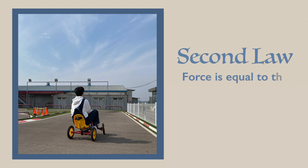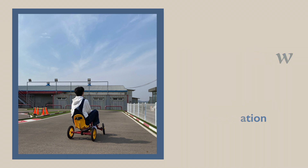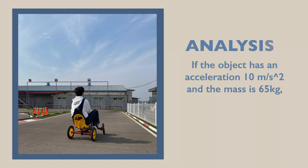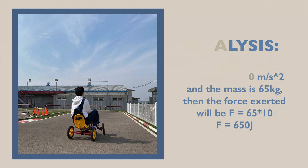The second law states that force is equal to the mass of an object multiplied by its acceleration. For example, in this image, if the object has an acceleration of 10 meters per second squared and the mass is 65 kilograms, then the force will be 650 joules.